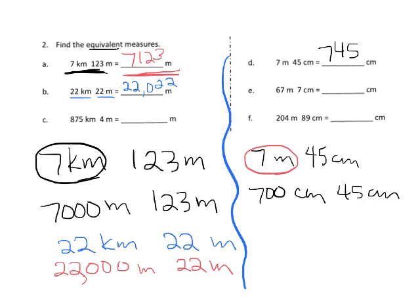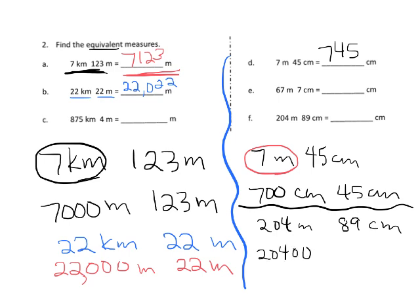Let's jump to problem F: 204 meters plus an extra 89 centimeters. Each meter is 100 centimeters, so 204 meters gives us 204 copies of 100. The shortcut is to add two zeros, giving 20,400 centimeters, plus the extra 89 centimeters, for a total of 20,489 centimeters. And that's how we find equivalent measures.